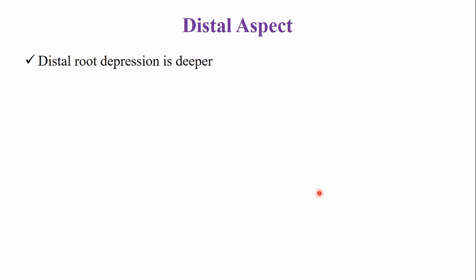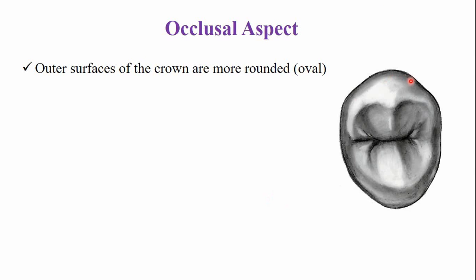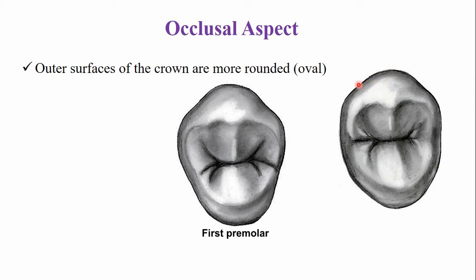On the distal side, the root depression is deep compared to the depression on the mesial surface. Otherwise, there are no extraordinary features from this aspect. The outer surfaces of the crown are more rounded compared to the first premolar, so the tooth appears more oval in shape, as compared to the more angular outline of the first premolar occlusal surface.